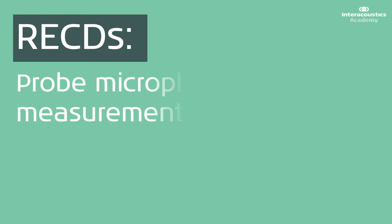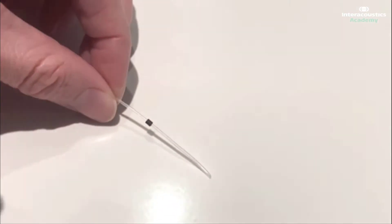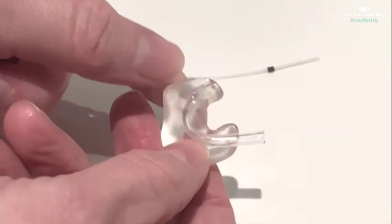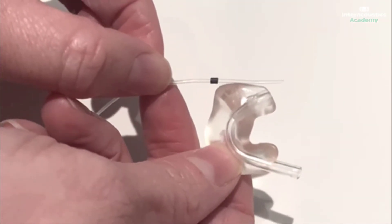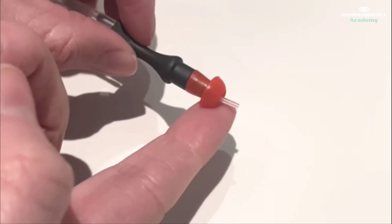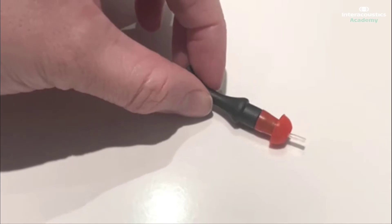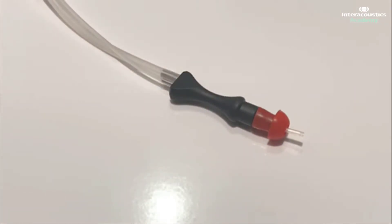Firstly, it is important, as with REMs, to ensure the probe microphone is marked to the correct length for insertion. For paediatric patients, it is recommended to insert the probe microphone a few millimetres beyond the end of their ear mould, the SPL60 probe, or the foam tip. The SPL60 probe accounts for this with its design.